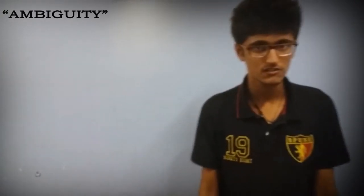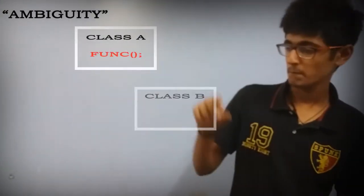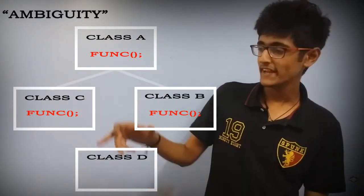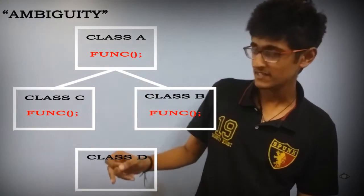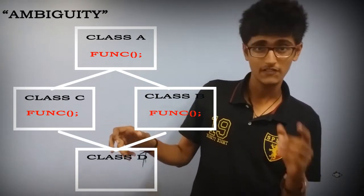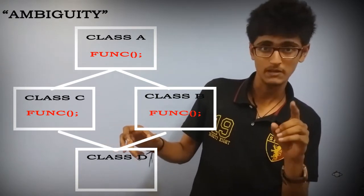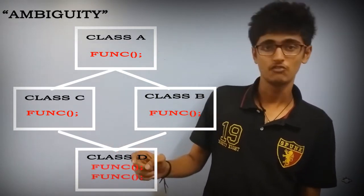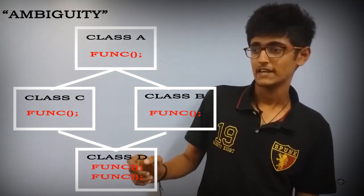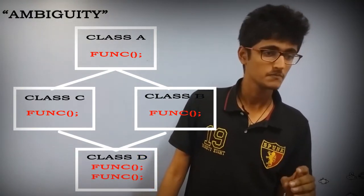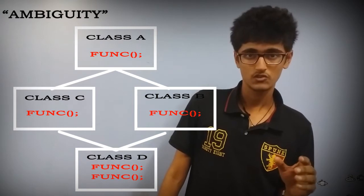Here's an example. Let's say we have four classes: A, B, C, and D. Now let's say B and C inherit A, and D inherits B and C. So if we call a function of the same name using this object, the compiler will be confused about which one to call — that would be ambiguity. The call would be ambiguous.